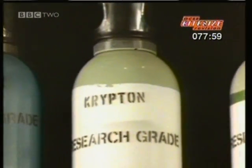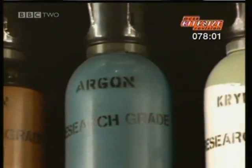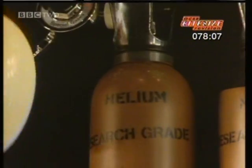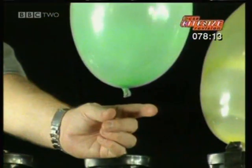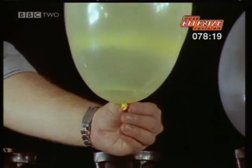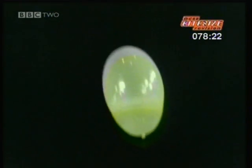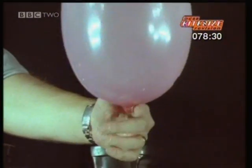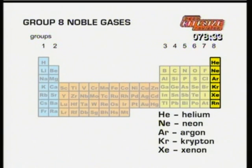Take the noble gases — there's not much chemistry to see, but there are changes in their physical properties; for instance, in their density. A balloon filled with helium rises quickly. A neon-filled balloon rises slowly. An argon balloon falls slowly. Krypton is denser still, and xenon is the densest of all. In this case, the density of each noble gas increases as you move down the group from one gas to another.